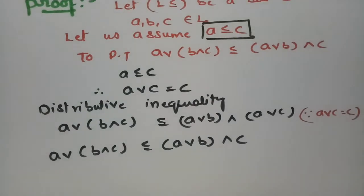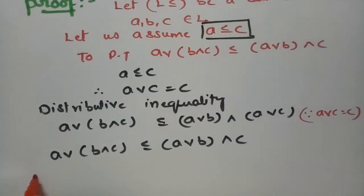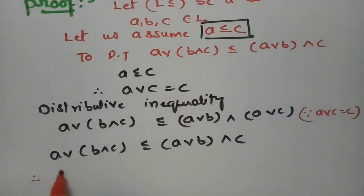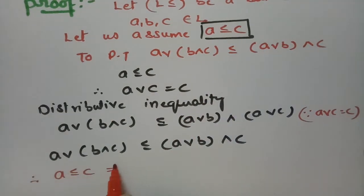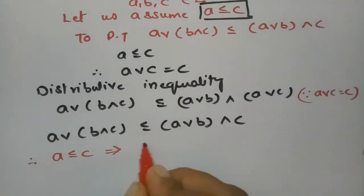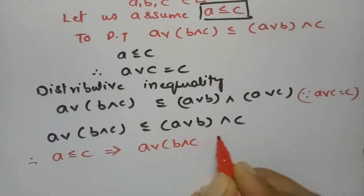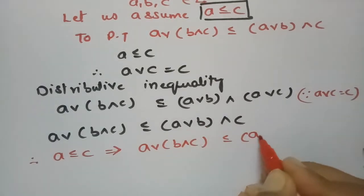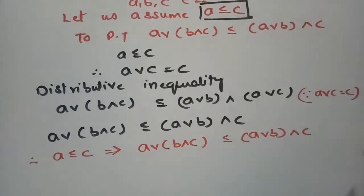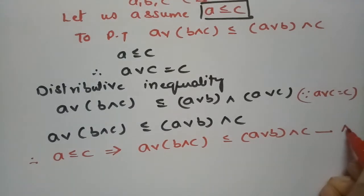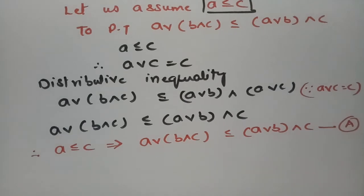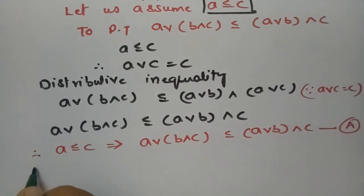Therefore, our assumption is A ≤ C, and we proved A∨(B∧C) ≤ (A∨B)∧C. This is equation number A.